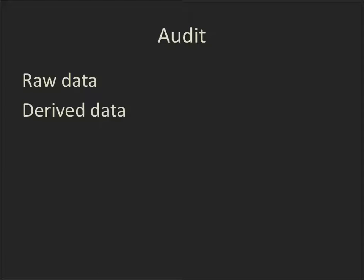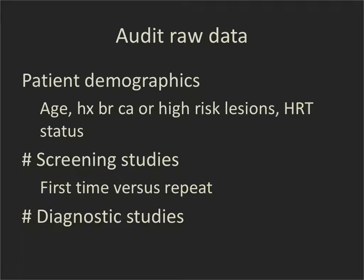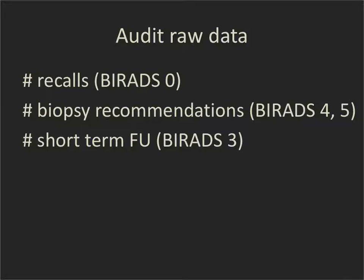Audit consists of two different types of data: raw data and derived data. The raw data includes patient demographics — age, history of breast cancer or high-risk lesions, and whether they are on hormone replacement therapy. It also includes the number of screening studies, whether first-time or repeat screenings, and the number of diagnostic studies. The number of recalls (BI-RADS 0s), the number of biopsy recommendations from BI-RADS 4 and 5, and the number of short-term follow-ups of BI-RADS 3 are all recorded.